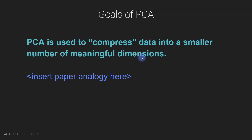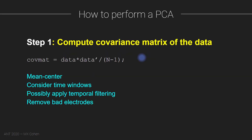I'll walk you through the steps for computing a principal components analysis. Step one is to compute the covariance matrix of the data — you can write this in compact linear algebra as the data matrix times its transpose. In practice, you need to keep in mind that the data should be mean-centered, you have to think about time windows, you might want to apply some temporal filtering, and you may need to handle bad electrodes or noisy voxels. Some pre-processing ensures you have a clean, high signal-to-noise covariance matrix.